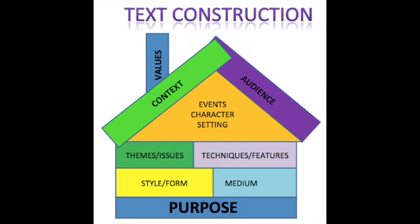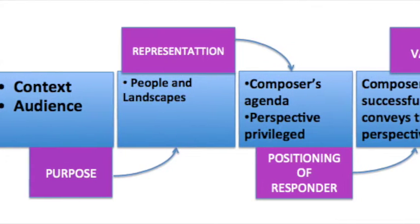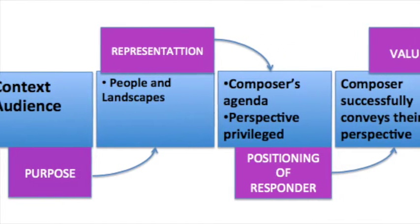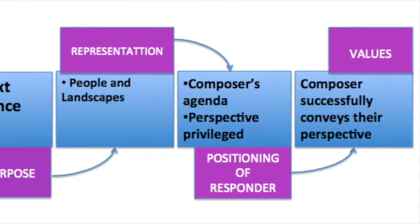Further up again, we look at themes and issues presented in the text through various techniques, such as visual or language devices and features. There may be events, characters and settings, along with some important contextual details and awareness of audience, and finally value. In putting all of that together, you need to be preparing information that addresses each of these key areas with a particular focus on people and landscape.